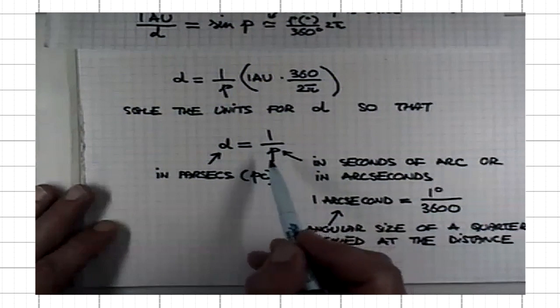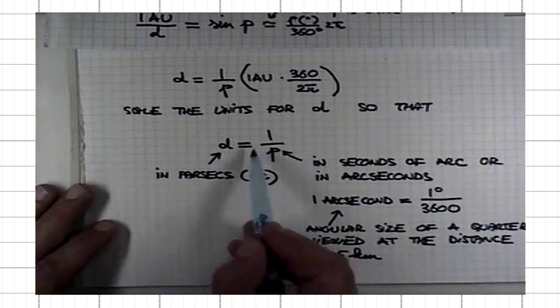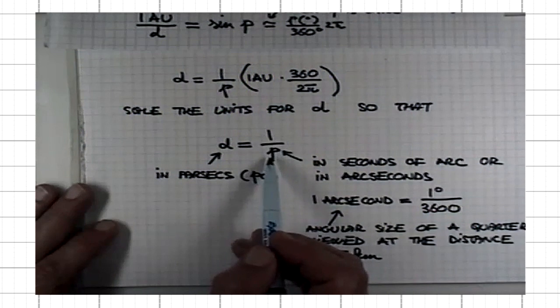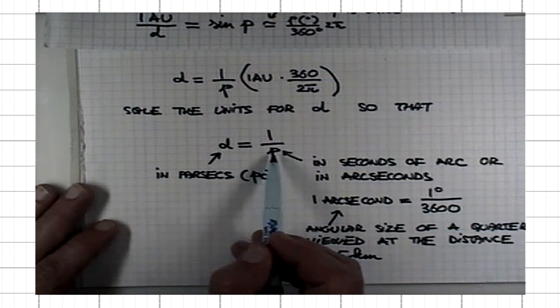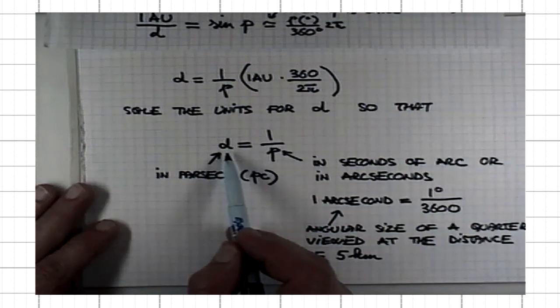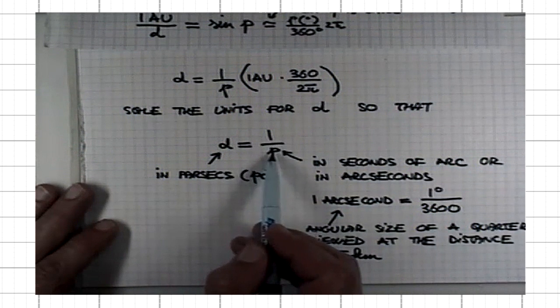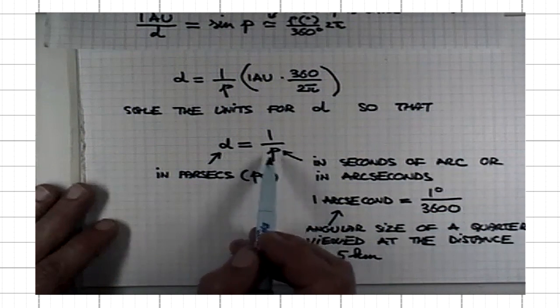One thing you realize is that the greater the distance, the smaller the parallax angle. Because as I make the parallax angle smaller, I am dividing 1 by smaller and smaller number, and therefore the distance is increasing. If p is 0.1, then 1 over 0.1 is 10. If p is 0.01, smaller, then 1 over 0.01 is 100. The bigger the distance, the smaller the parallax angle and vice versa.